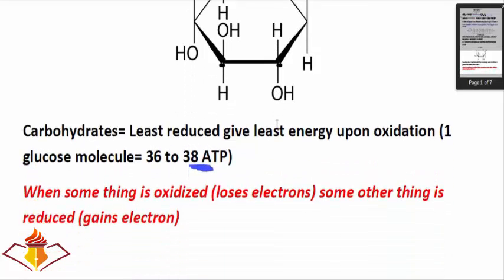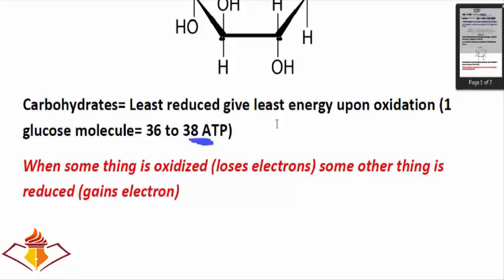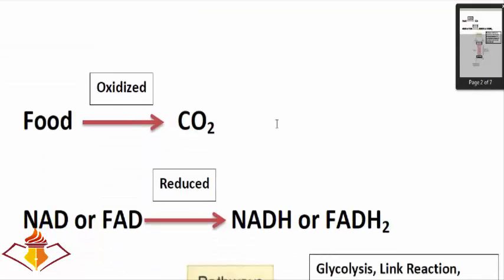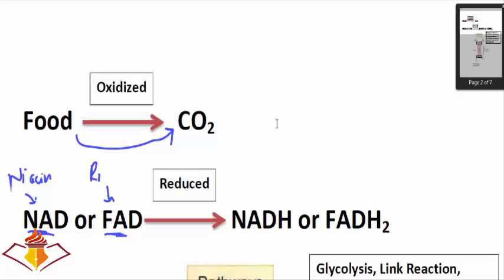When something is oxidized — meaning it loses electrons — some other thing must be reduced, gaining those electrons. This is important to understand the whole energy metabolism. When food is oxidized to carbon dioxide, the things that get reduced are NAD and FAD, which are coenzymes. NAD is derived from niacin while FAD is derived from riboflavin — these are water-soluble vitamins.